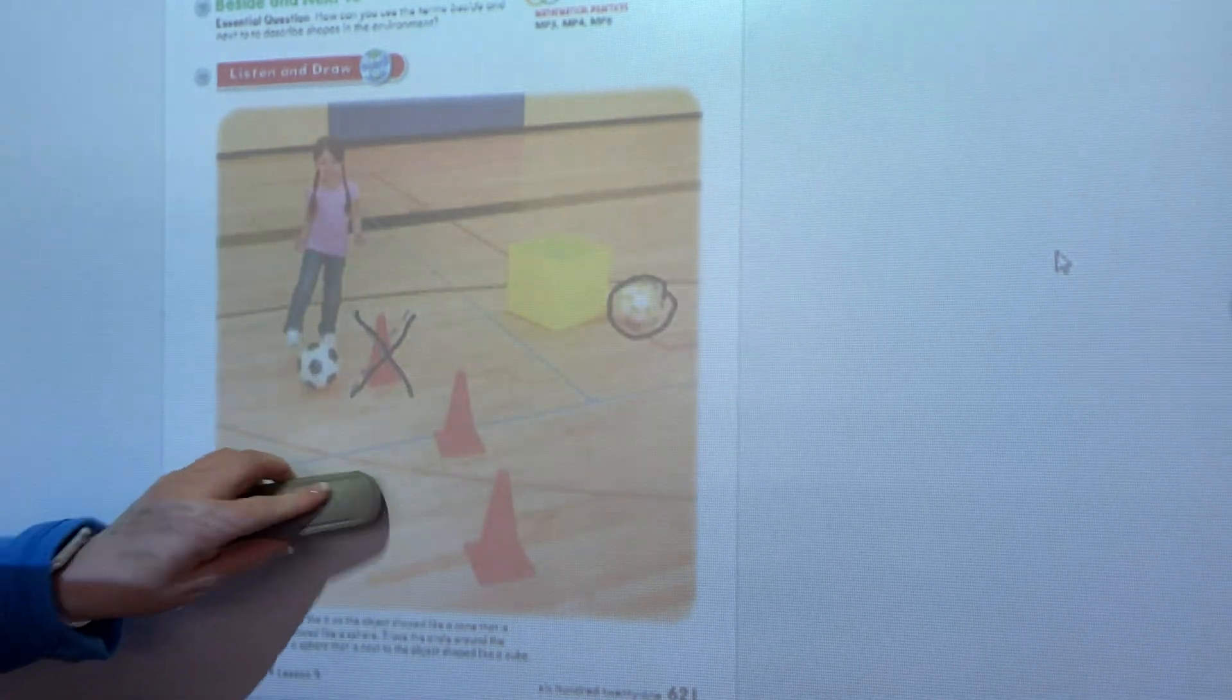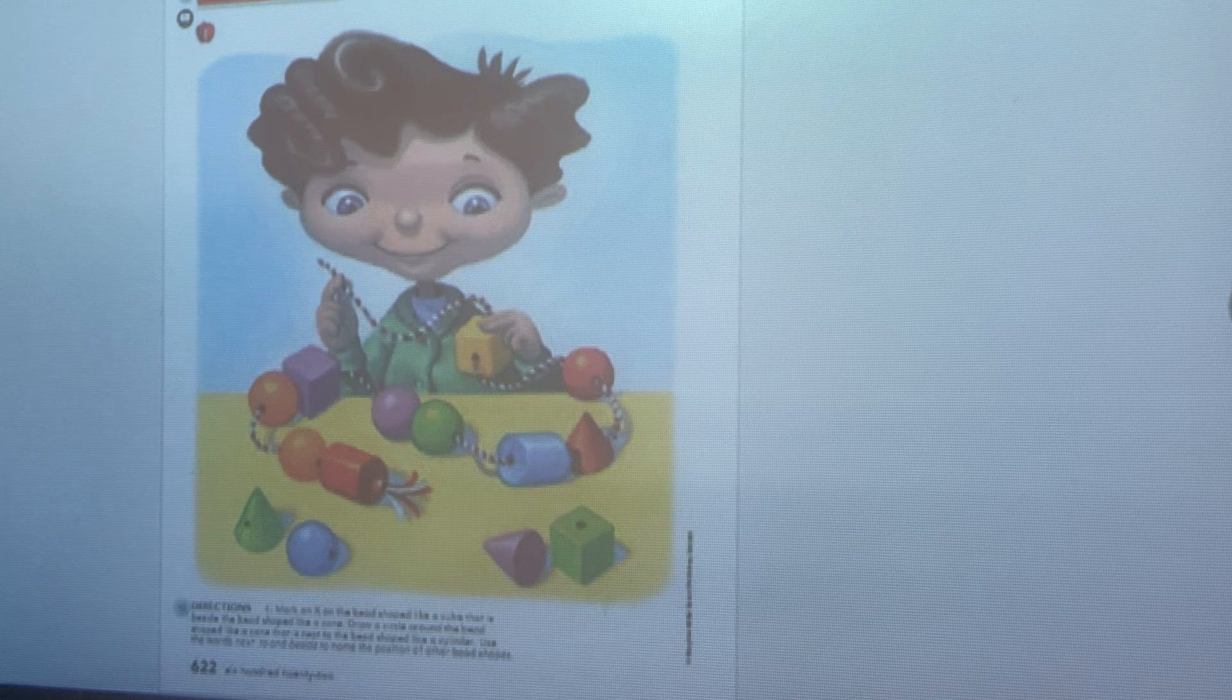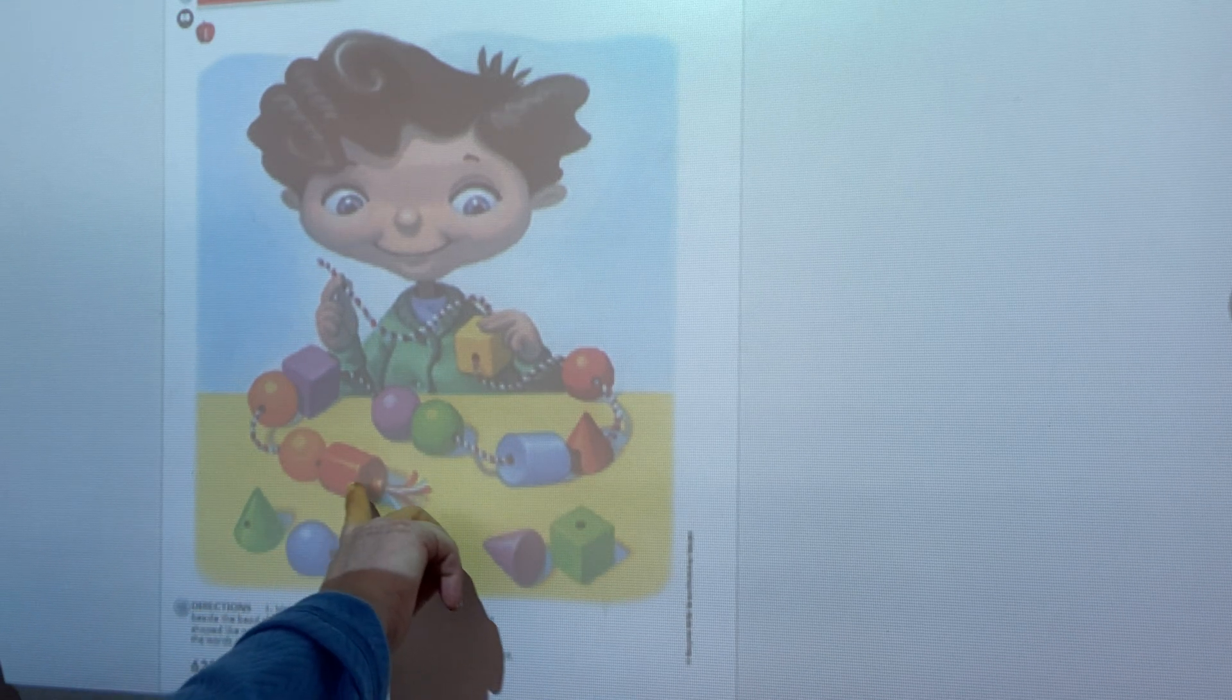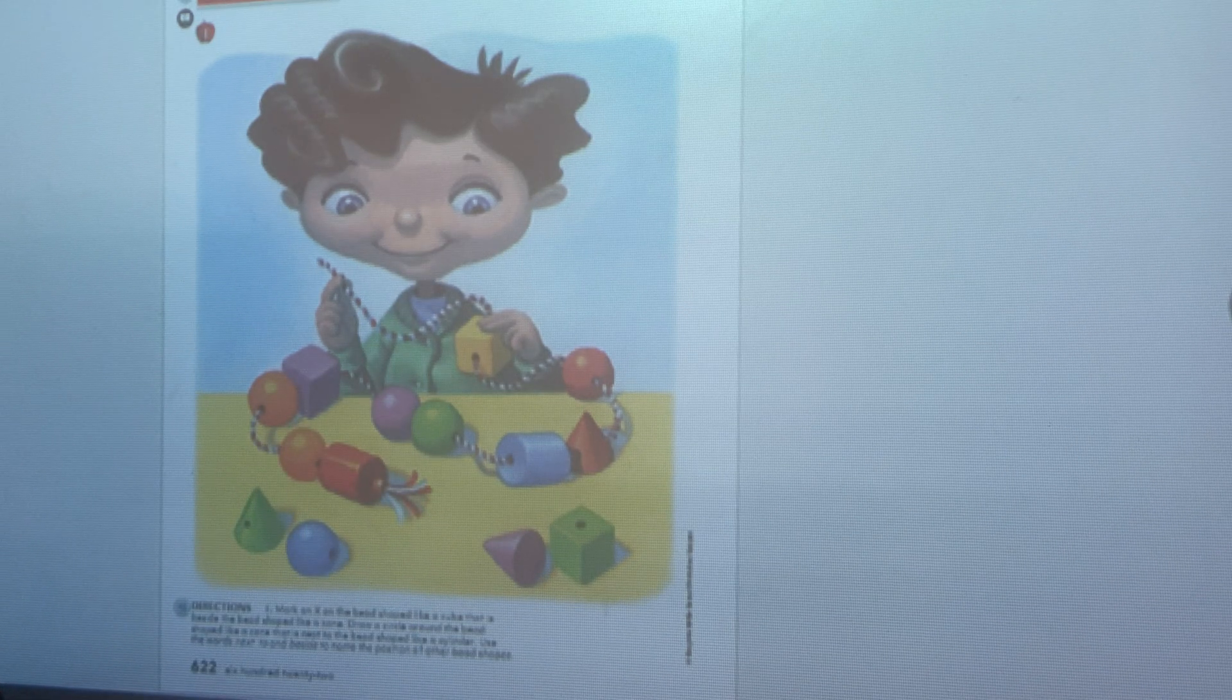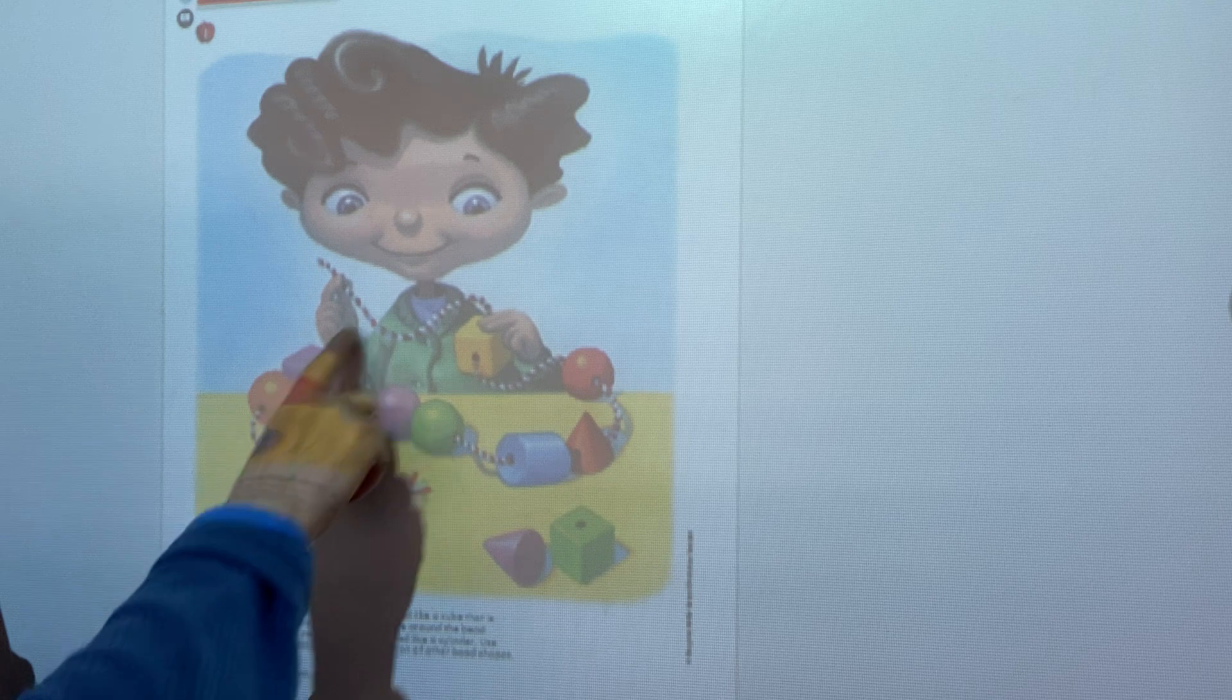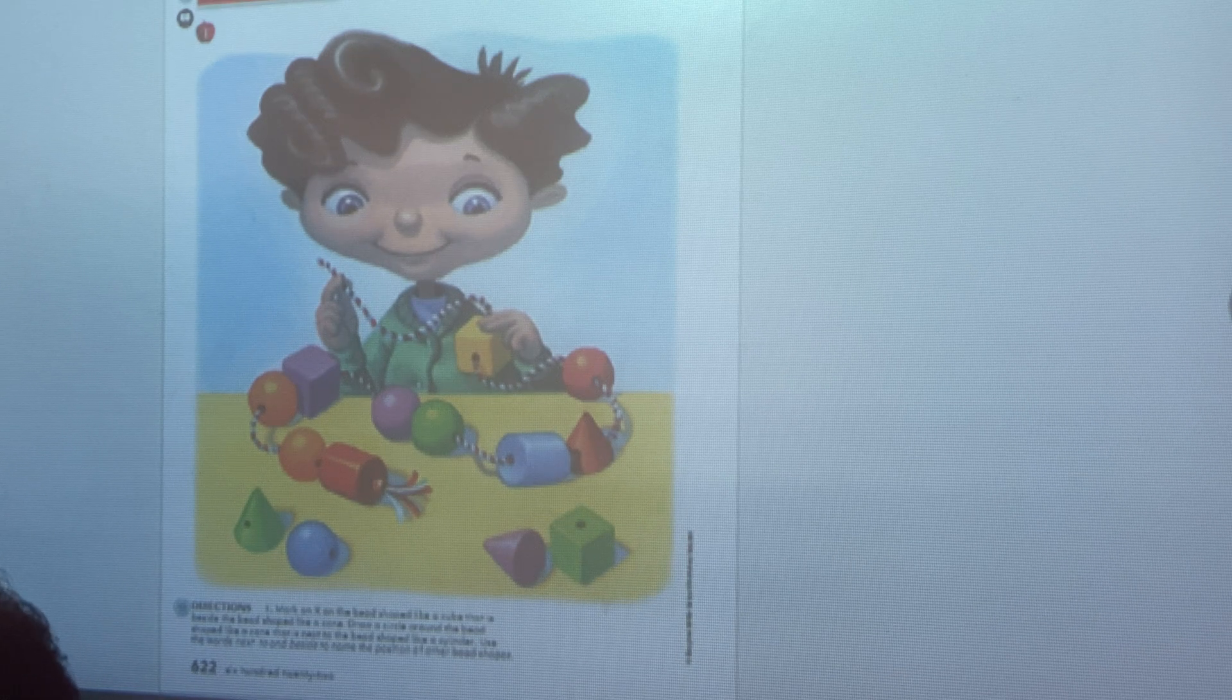We are going to continue to talk about next to and beside. On this page, you will see there is a friend who it looks like they have laced some beads up. Do you see that? You can take a string and you can put them through the beads. And if you look, each of those beads are a solid or three-dimensional shape. See if you can go through all of them and see if you can name every three-dimensional shape there. That would be amazing if you could do that.